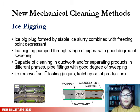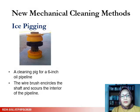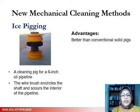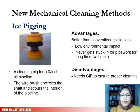Another mechanical cleaning method is ice pegging, formed by a stable ice slurry. It is pumped through a range of pipes and has been used to remove soft fouling in jam, ketchup, or fat production. A cleaning pig for oil pipelines consists of a wire brush and circles with a shaft that scour the interior of the pipeline. The advantage of ice pegging is low environmental impact, but these tools need to be cleaned with CIP to ensure proper cleaning.